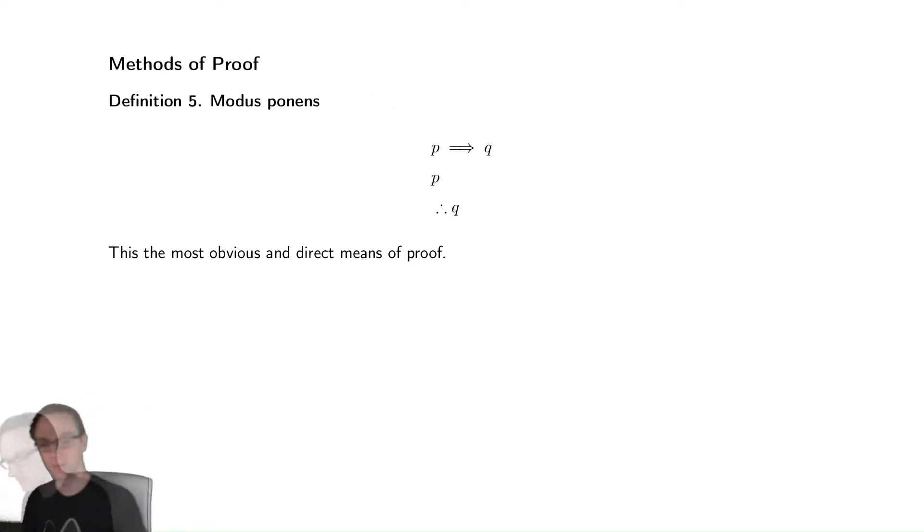So our first type of proof is going to be modus ponens. This is sometimes called an inductive argument. It is a very obvious argument. You have that P implies Q. You know that P is true, so you can therefore conclude that Q is true. This should hopefully make perfect sense. You know that every time P is true, Q is true. I then tell you P is true, so therefore necessarily Q must be true. Again, hopefully very straightforward.